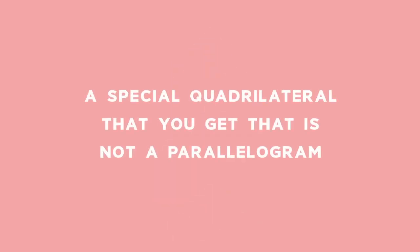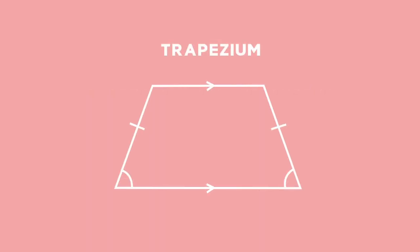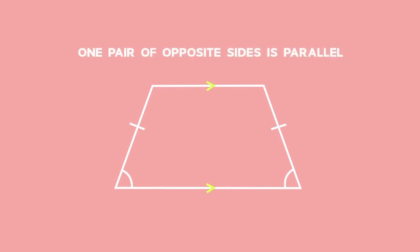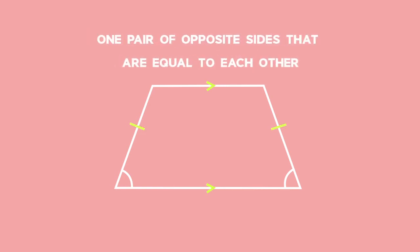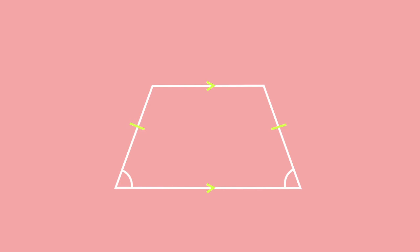Another special quadrilateral that is also not a parallelogram is a trapezium. A trapezium is a quadrilateral in which just one pair of opposite sides is parallel. A special type of trapezium is called an isosceles trapezium, in which one pair of non-parallel sides are equal to each other, and therefore the angles opposite those equal sides are also equal to each other.